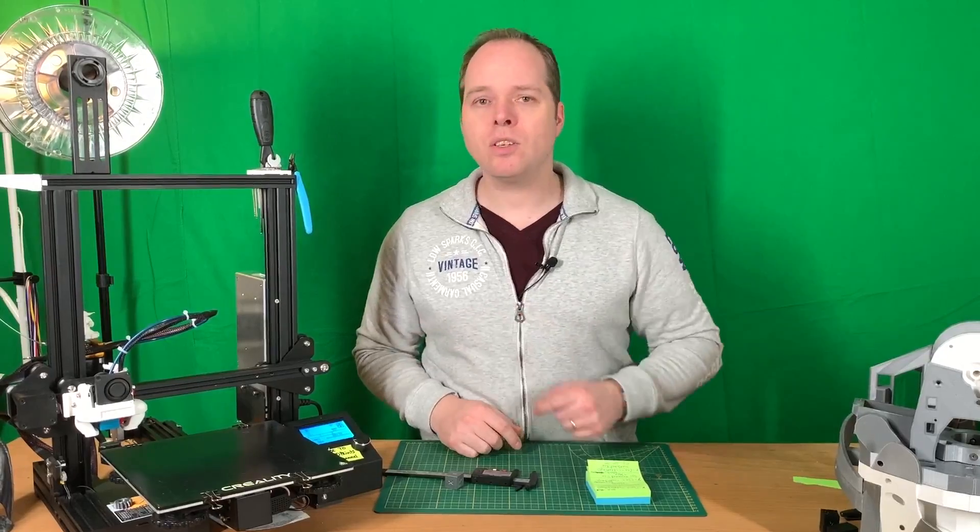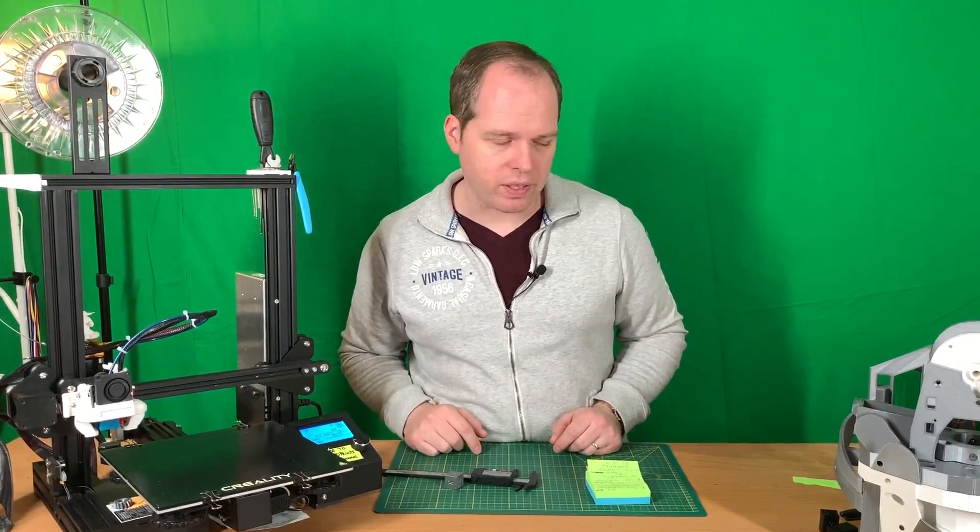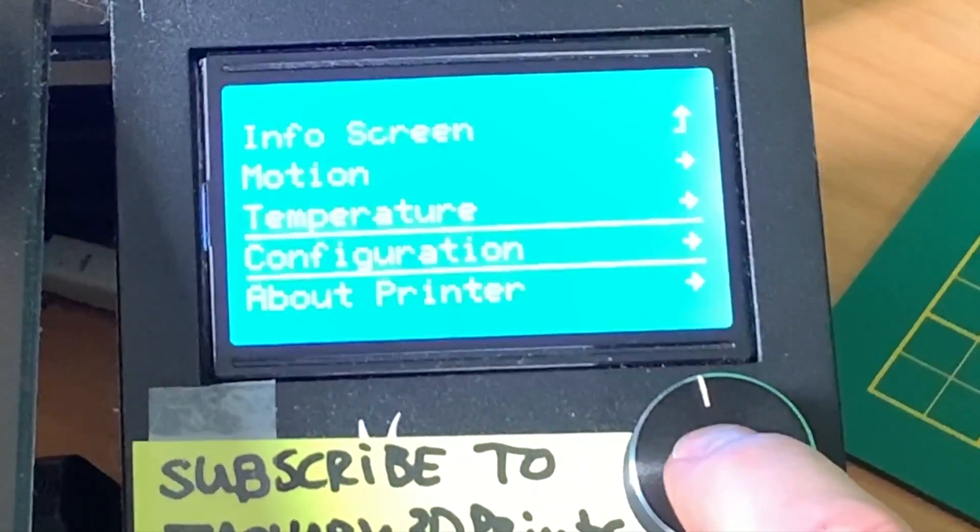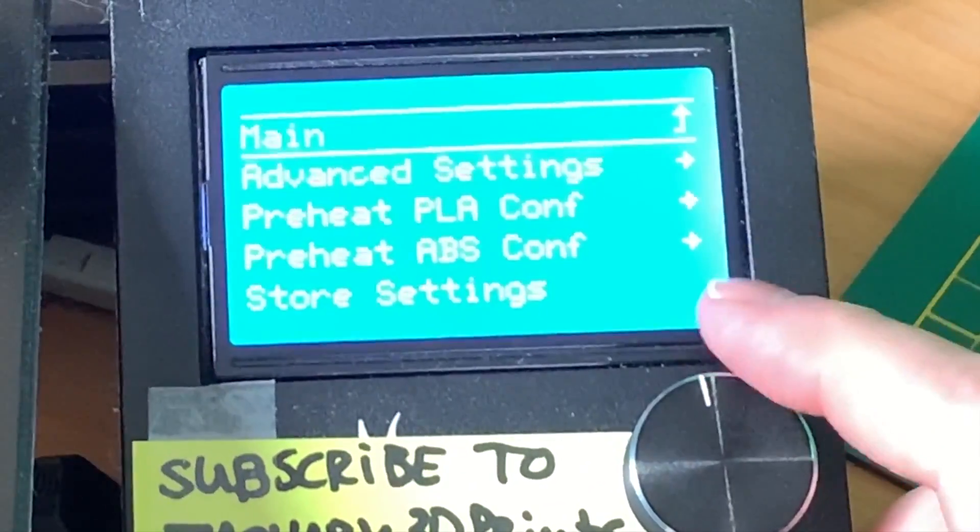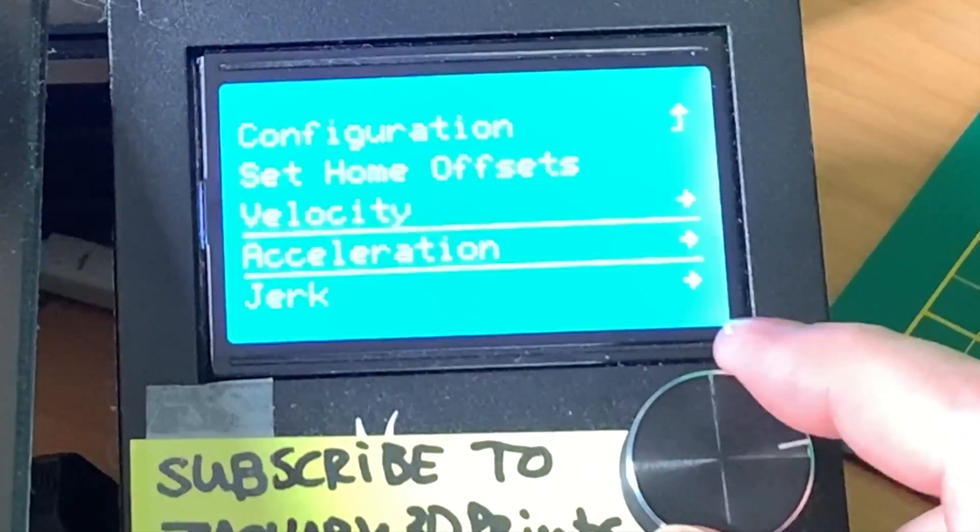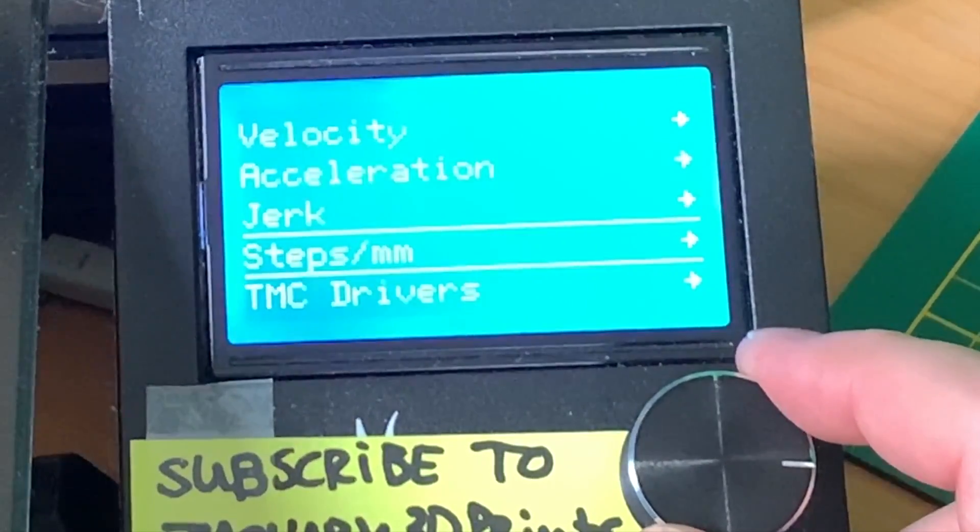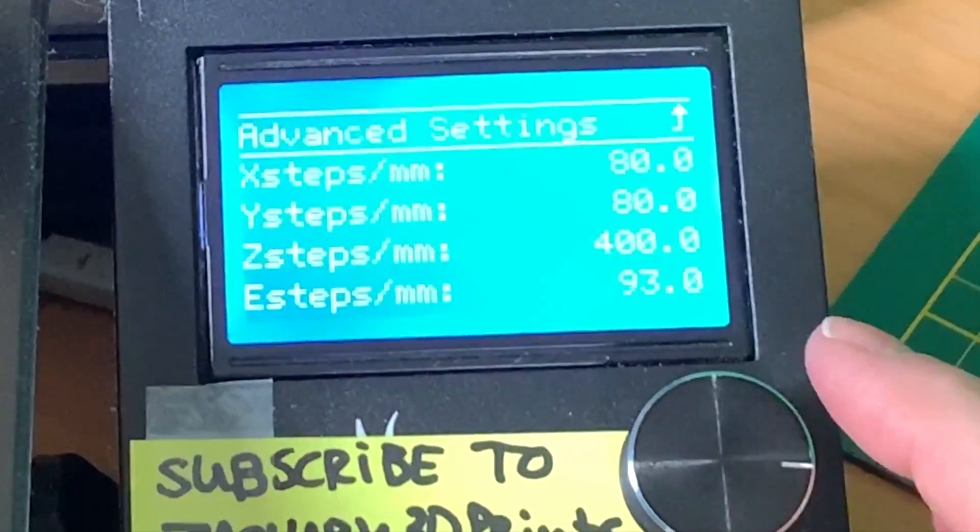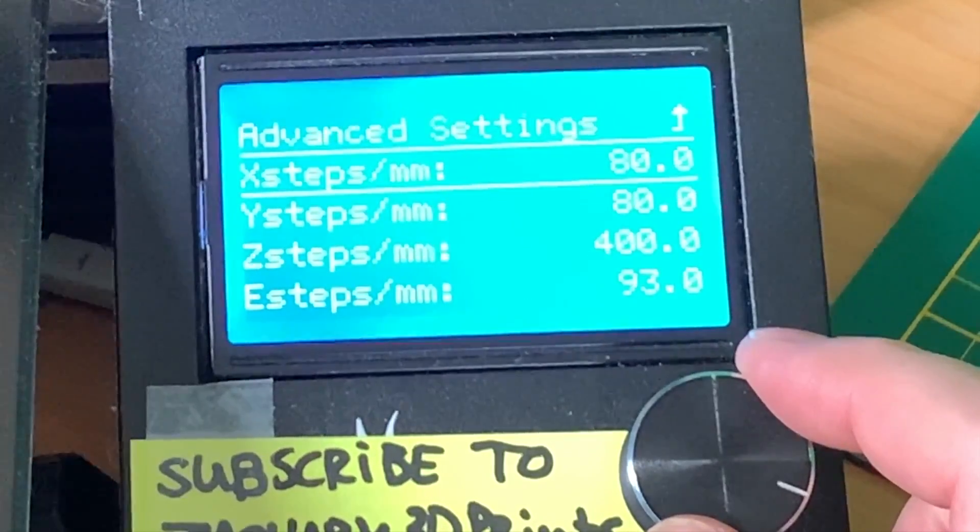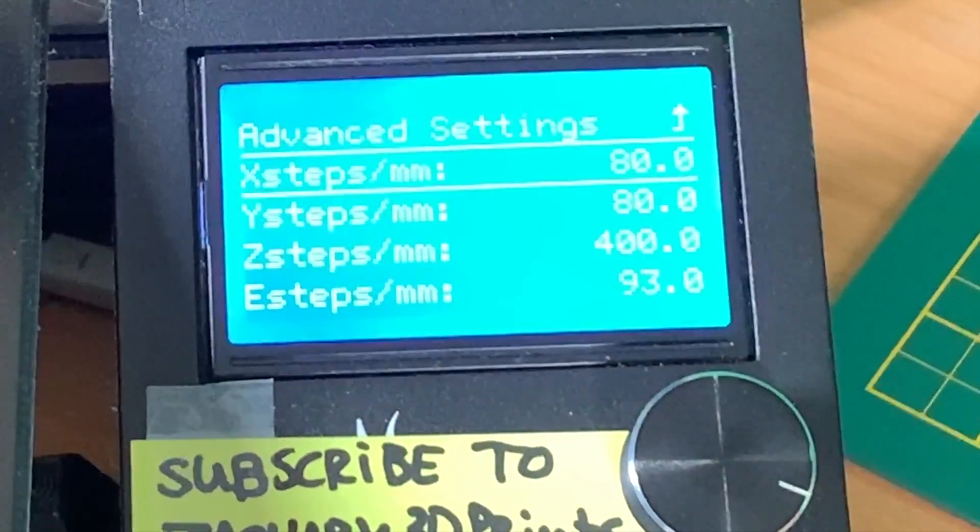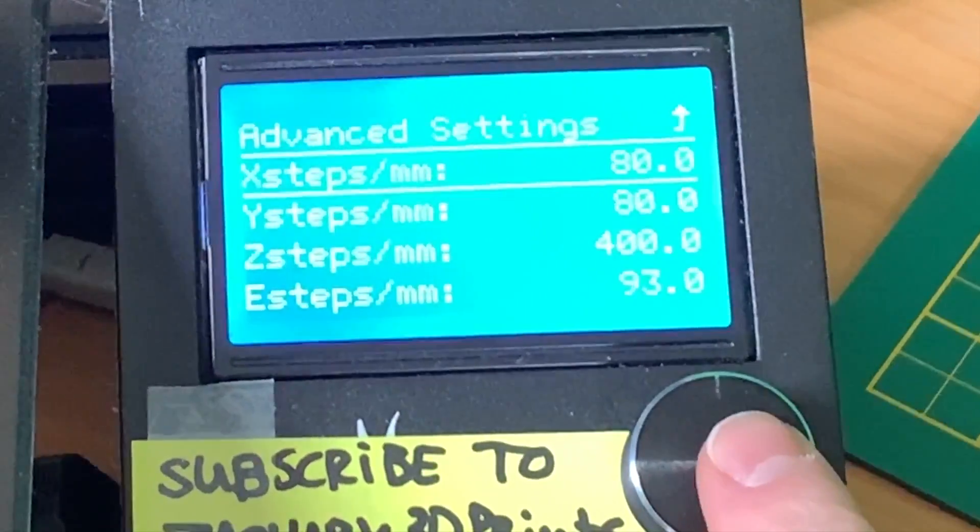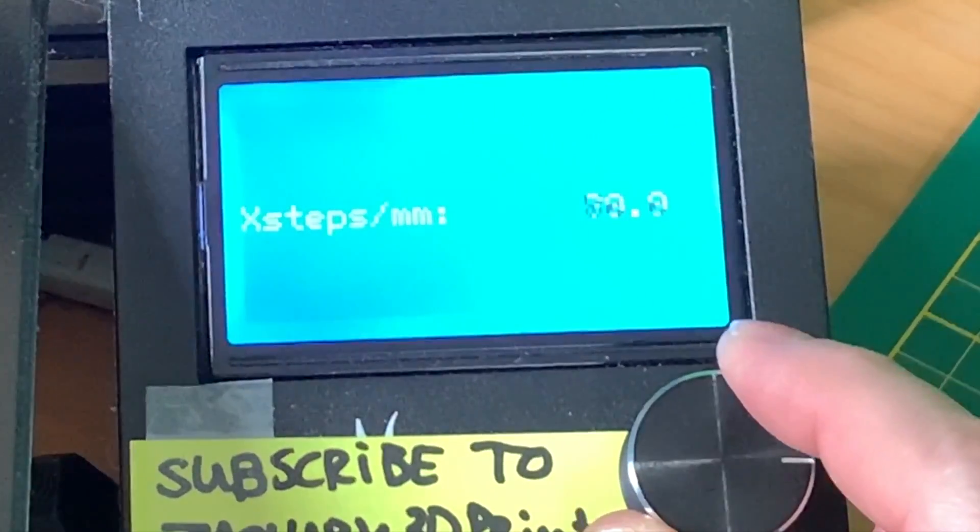So now we are going to adjust the steps in the 3D printer. Press the knob and go to Configuration, then we go to Advanced Settings, and then we are going to Steps per Millimeters. For the formula that we had, we had 79.6. We press the knob and we just go a little bit down. And as you can see, it's not that much, but now we are calibrating our 3D printer in the X steps per millimeter.